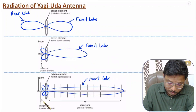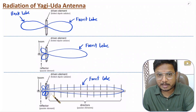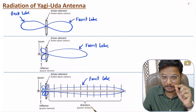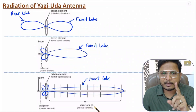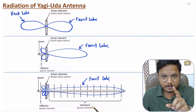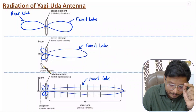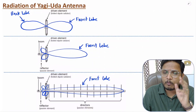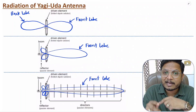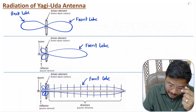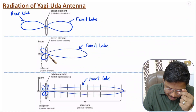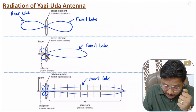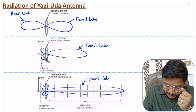This Yagi-Uda antenna functions based on two principles: reflection and direction. Reflection happens based on impedance mismatch. With the reflector element, we provide impedance mismatch — because of this, whatever power is coming towards the reflector element gets reflected in the front direction. So with the back lobe, whatever power is going in that direction gets reflected in the front direction due to impedance mismatch.